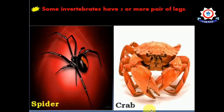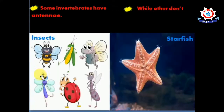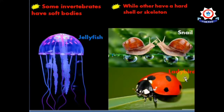Some invertebrates have three or more pairs of legs — for example, insects, spiders, and crabs — while others don't have any legs, for example worms and slugs. Some invertebrates have antennae, for example insects, while others do not, for example starfish. Some have soft bodies, for example jellyfish, while others have a hard shell like a snail or an exoskeleton like a ladybird to protect their soft bodies.